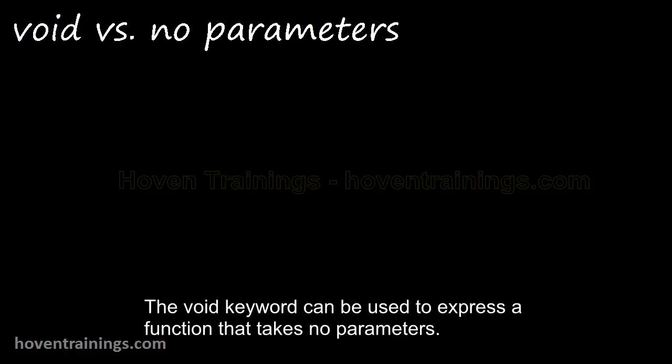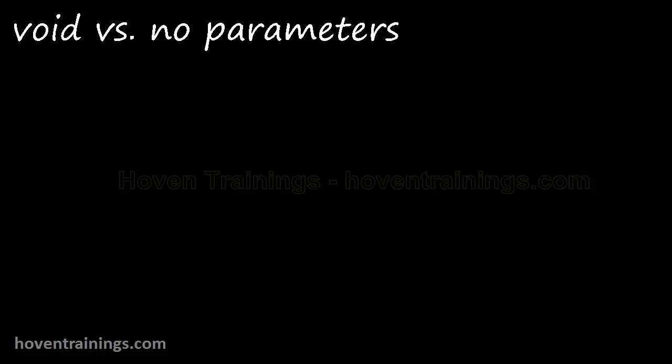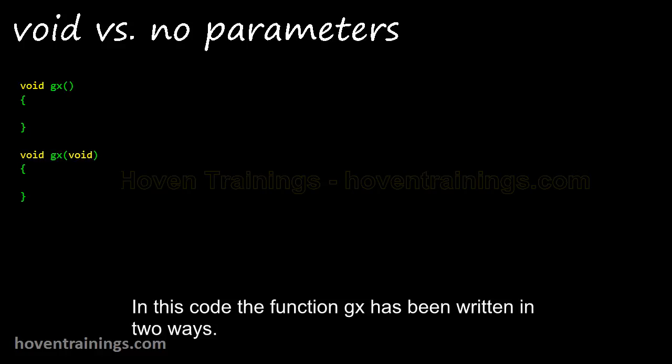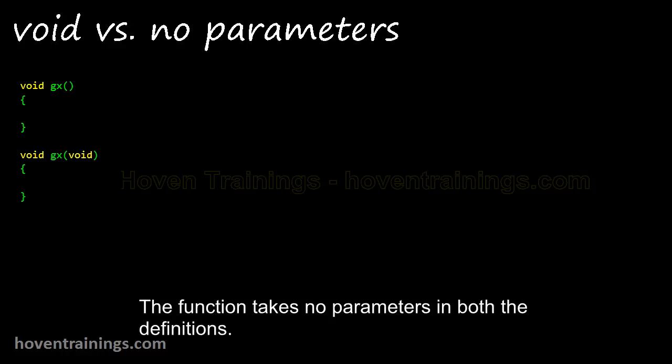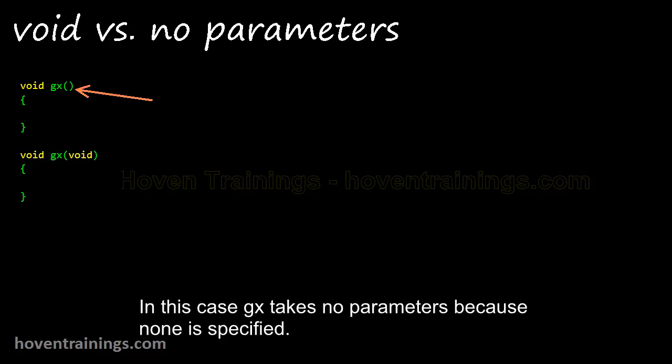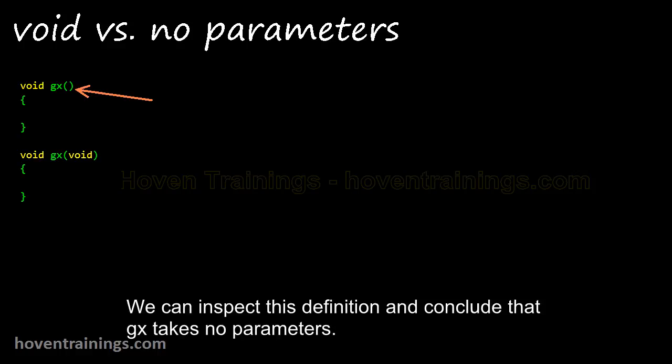The void keyword can be used to express a function that takes no parameters. In this code the function gx has been written in two ways. The function takes no parameters in both the definitions. In this case gx takes no parameters because none is specified.